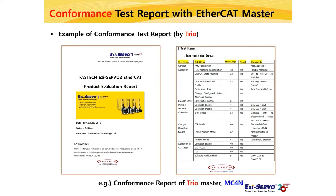Here is an example of an actual conformance test report. This is a report written after testing the Fastech EtherCAT slave by a master company called Trio Motion Technology in the UK. Each evaluation item was taken directly from the CIA-402 drive profile. For example, you can check test items for drive status control, operation enable, operation disable, and error codes of the CIA-402 drive profile. Tests were conducted for each evaluation item. If this report is delivered to customers using the Trio master, they can use Fastech EtherCAT products without worrying about compatibility.